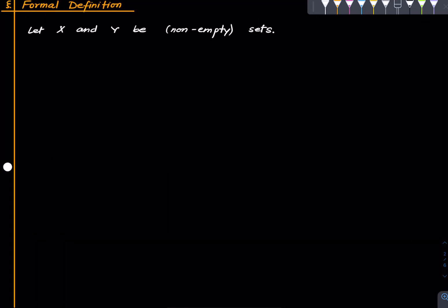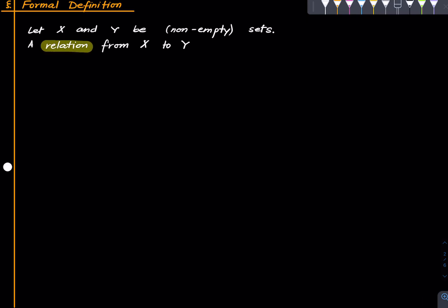Let's directly define what a relation is. Typically one should motivate a definition with a nice example, but for this particular concept let us not do that. Let us directly see what a relation is. Suppose x and y are non-empty sets. Then a relation from x to y is a subset of x cross y. This may feel like a very abstract or meaningless definition.